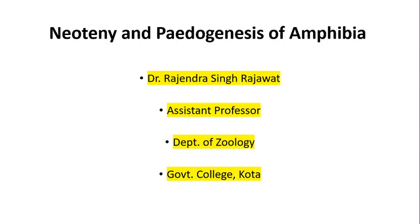Neoteny refers to the retention of a larval or embryonic trait in the adult body. Whereas the second term, Pedogenesis or Pedomorphosis, refers to the development of gonads and/or production of young ones by an otherwise immature larva or pre-adult animal, such as in liver fluke and salamanders.